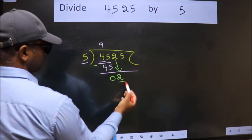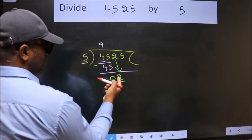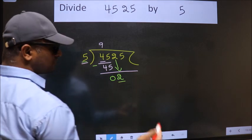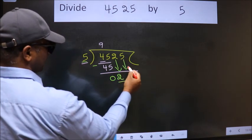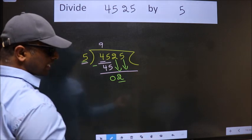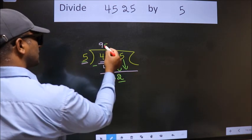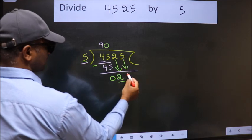Now here we have 2, here 5. 2 is smaller than 5, so we should bring down the second number. And the rule to bring down second number is put 0 here. Then only we can bring down this number.